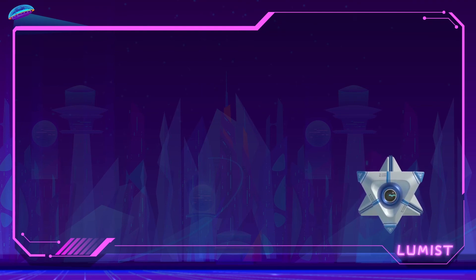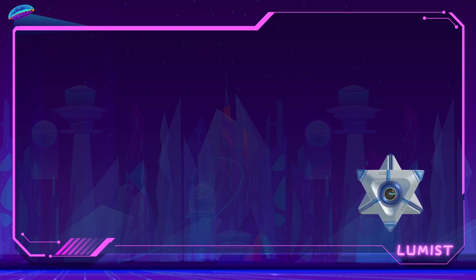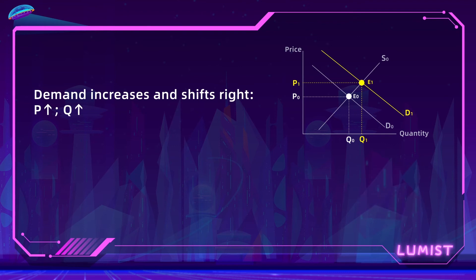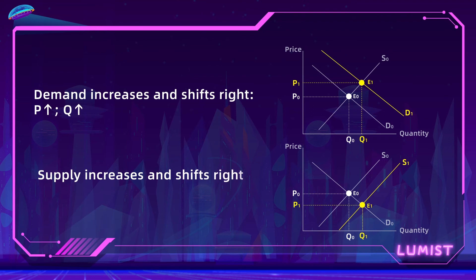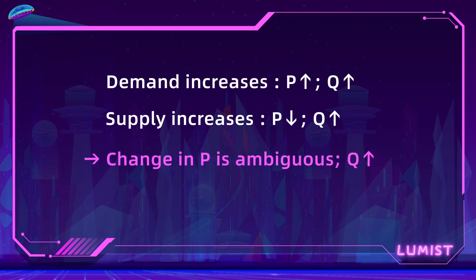So you might be confused about what exactly happens to price and quantity when demand and supply are both increasing. Let's break down the final effect one change at a time. An increase in demand by itself increases both market price and market quantity. An increase in supply decreases market price but still increases market quantity. Putting these two effects together, the change in market price is ambiguous — demand pushes price up while supply pushes it down — but market quantity will definitely increase regardless. It depends which effect is bigger: the demand increase or the supply increase.